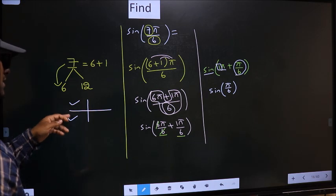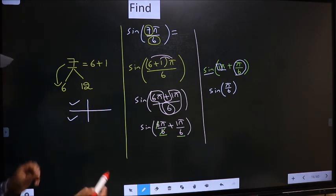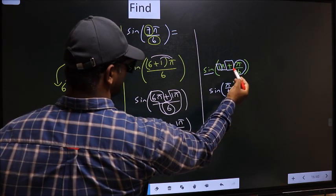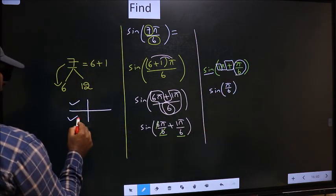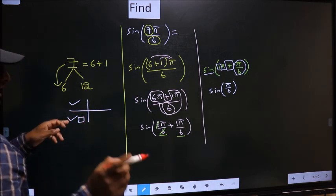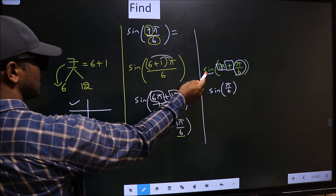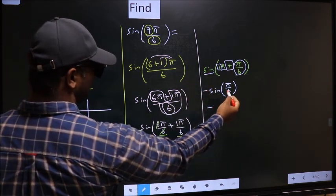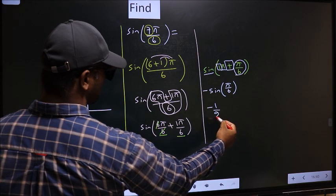Now to decide in which quadrant does it lie, we should look at this symbol: plus. Here we have plus. That means the angle lies in the third quadrant. And in the third quadrant, sine is negative. So you put negative. So negative sine π/6 is 1/2. So this is our answer.